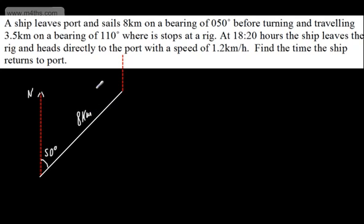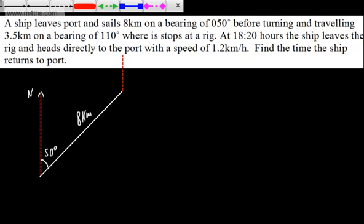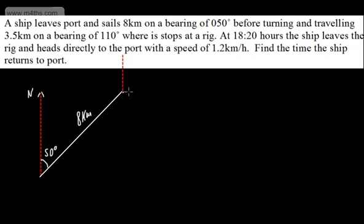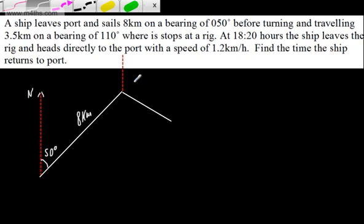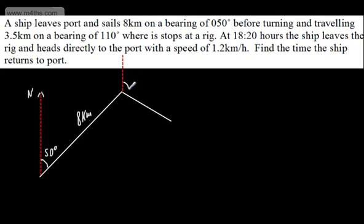We're now going to travel on a bearing of 110 degrees. So 90 degrees is just there, so 110 is going to be somewhere around there, and this is now for 3.5km. So what we've got then is this angle right here, and this is going to be 110 degrees. And this is going to be now 3.5km.